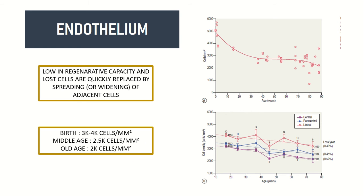At birth, we are blessed with endothelial density of around 3,000 to 4,000 cells per mm². Due to loss of proliferative capacity postnatally, we are left with endothelial density of 2,500 cells per mm² at middle age and around 2,000 cells per mm² at old age — a 50% reduction compared to birth. In clinical practice, density of less than 1,500 cells per mm² is deemed unsuitable as a donor for corneal transplantation.